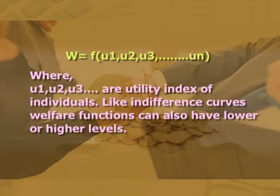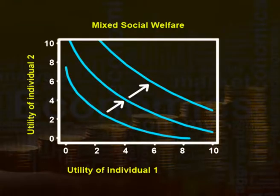Like indifference curves, welfare functions can also have lower or higher levels. Movement along the social welfare curve makes the individual better off or worse off. Construction of social welfare function is quite difficult, but not impossible. It could be considered by comparing deservedness of two individuals or could also be constructed by considering democracy, that is through voting.